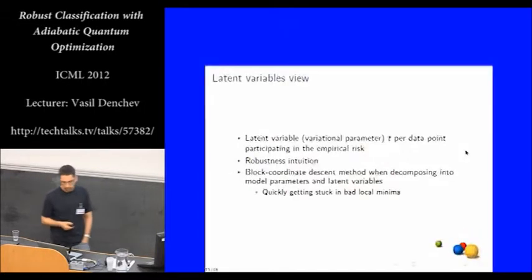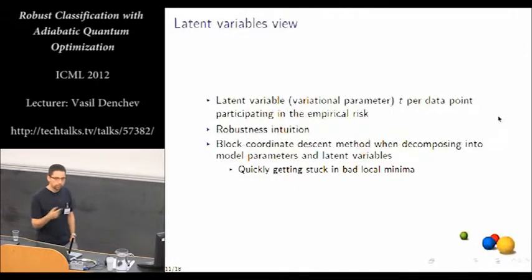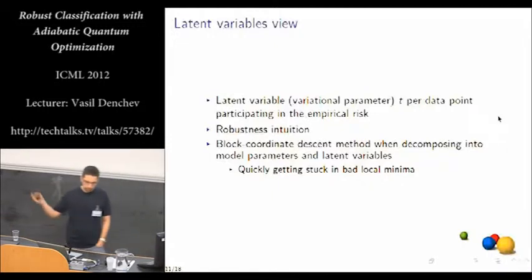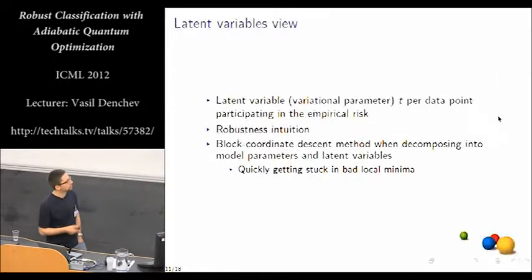Also can be viewed as a latent variable. So for each data point participating in the empirical risk, we would have a latent variable like that. And then the total number of qubits that we are going to need is going to depend also on the size of the training set as well as the number of features. But this variational parameter t at each data point gives us a nice intuition to how robustness is achieved. Basically, with the variational parameter, we can implicitly flip the label of a possibly mislabeled data point whenever it's incurring a large negative margin.